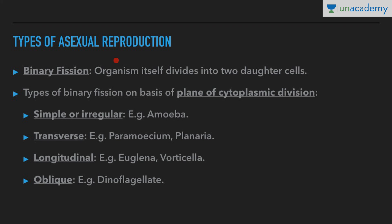We have two types of fission: binary fission and multiple fission. In binary fission, the organism itself divides into two daughter cells — a parent divides itself into two daughter cells. Because of binary fission, a single-celled organism is considered immortal.